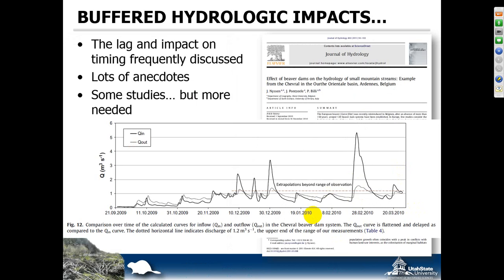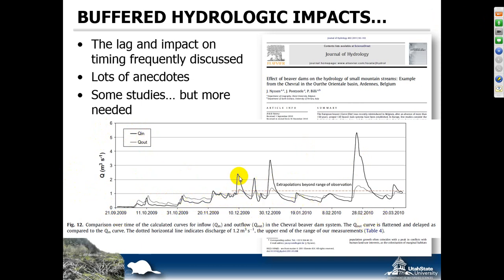There have been some interesting studies that back up some of these claims. This is actually a study from Europe. We have Q-in — the discharge in — as the dark bold hydrograph line, with discharge on the vertical and time on the horizontal, and Q-out on the bottom. What we see in this and other studies, and what's conceptually argued, is that a bunch of beaver dams in series tend to knock the peaks off floods and then attenuate that water, spreading out that flow over a longer season.